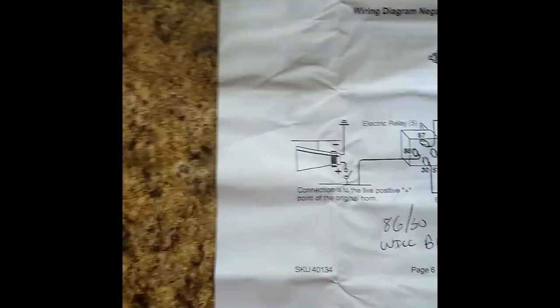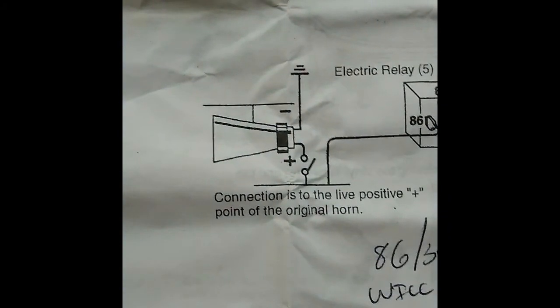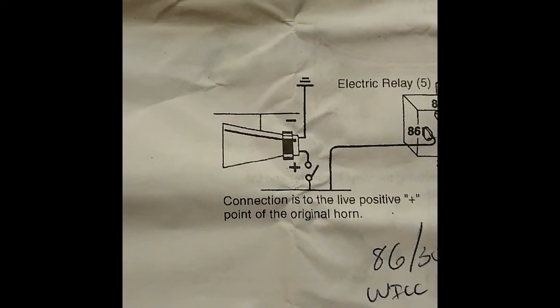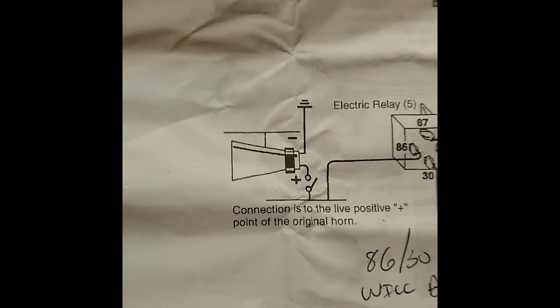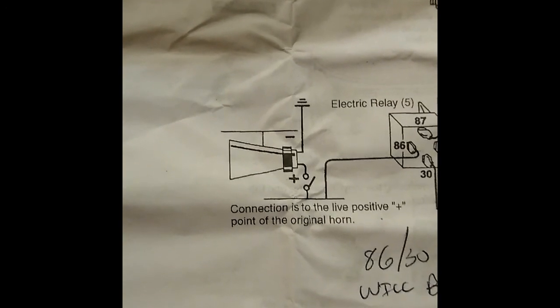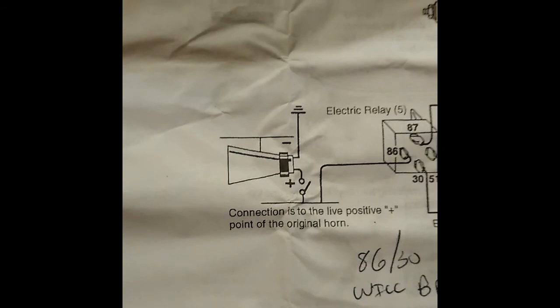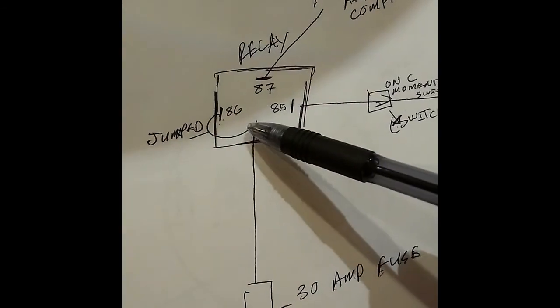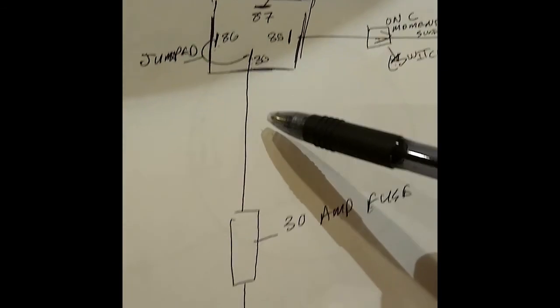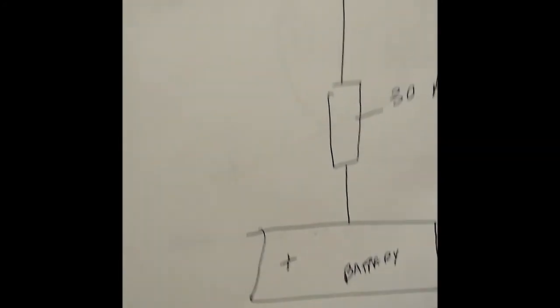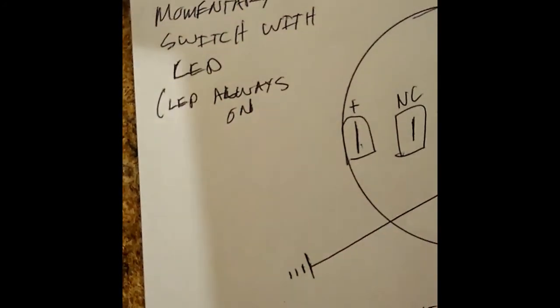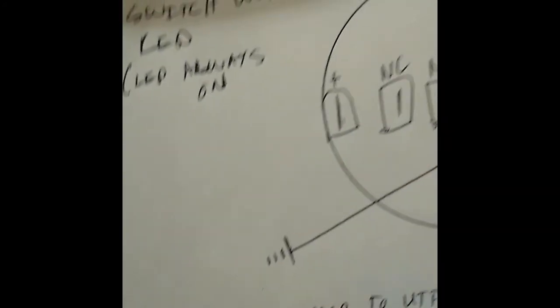Number 30 will be jumped to number 86. For example, omit that off the instructions. Forget it. Again, that's if you're going to make your horn independent from your car horn, which is what I would recommend, but that's up to you. So 30's jumped to 86. 30 will then come to your 30 amp fuse and then go into the positive side of your battery. All right. So that's going to be the wiring schematic for the relay.